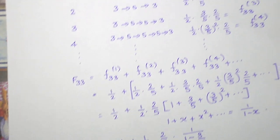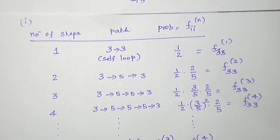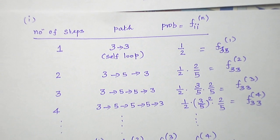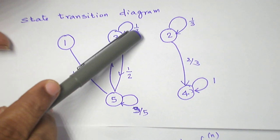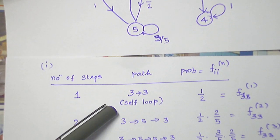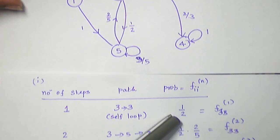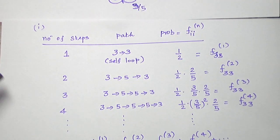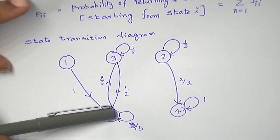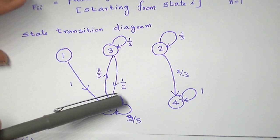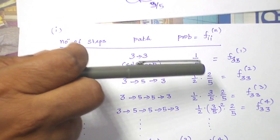Let me list the number of different steps in which state three returns to state three for the first time. Three to three in one step is through the self loop with probability one by two — this is F33 in one step. F33 in two steps: three goes to five, then five to three. The probability is one by two times two by five. I have not simplified; just keep it as is.